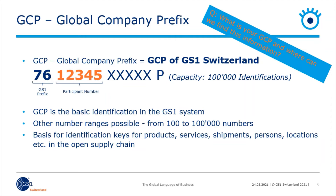This number range is according to GS1 Switzerland and will be used for all examples in this presentation. If your own number range is used up, you can request a new additional one. We offer different number ranges from 10 to 100,000. We will see exactly how the GCP is put together, afterwards into the GTIN and also into the basic UDI-DI.